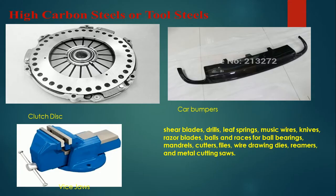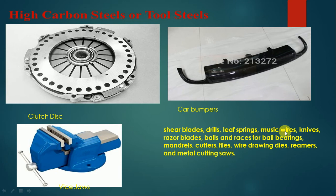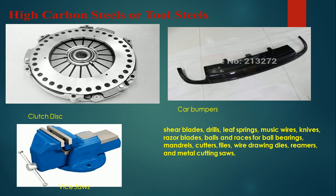Additional high carbon steel applications include clips, car bumpers, clutch discs, vise jaws, shear blades, drills, leaf springs, music wires, knives, razor blades, balls and races for ball bearings, mandrels, cutters, files, wire drawing dies, reamers, and metal cutting saws. Most tools are manufactured from high carbon steel.